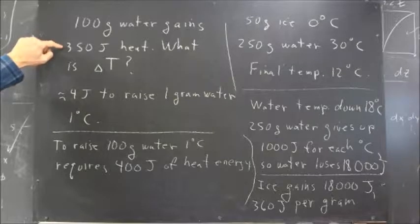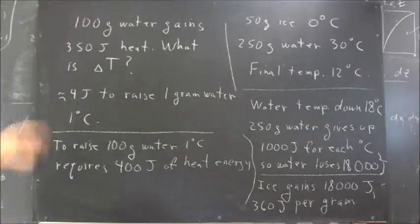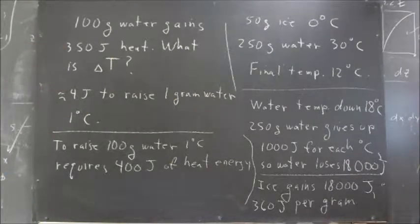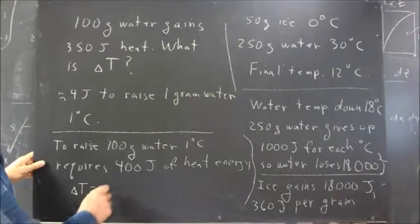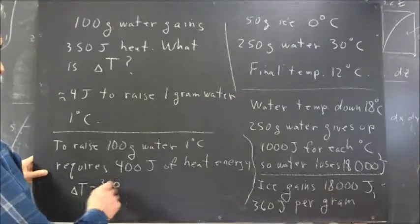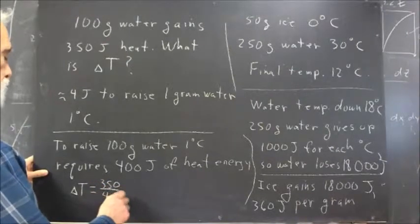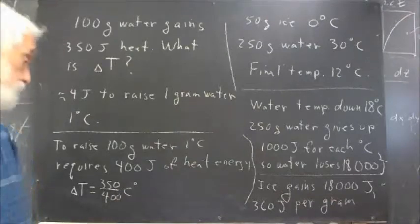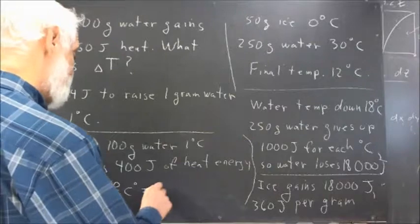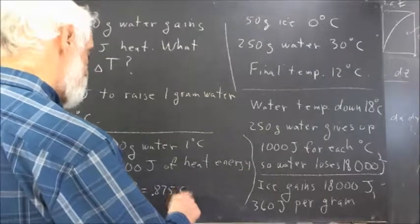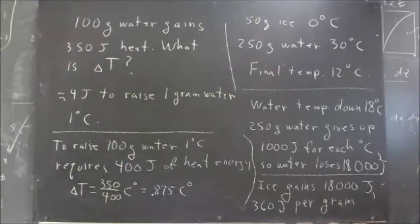We're only adding 350 joules. So, that means that we're going to get less than a degree of temperature change. And we could then say delta T is going to be what? 350 four hundredths of a Celsius degree. Okay, and that's going to be what? That's going to be 0.875 Celsius degrees.